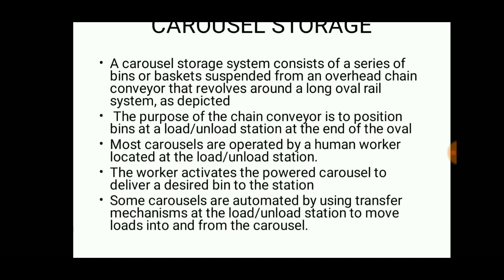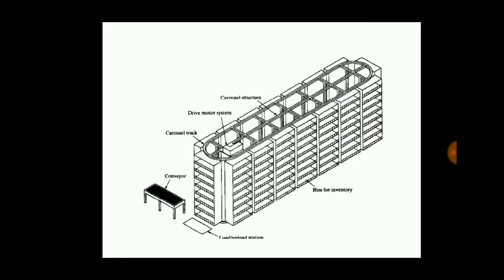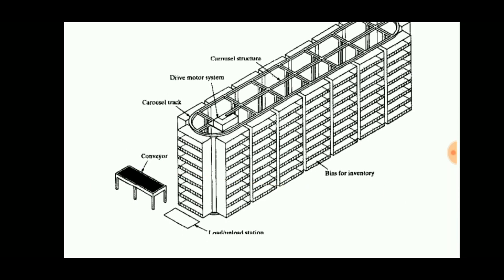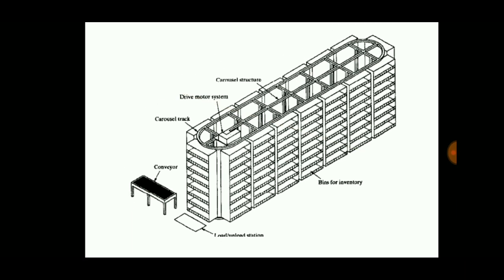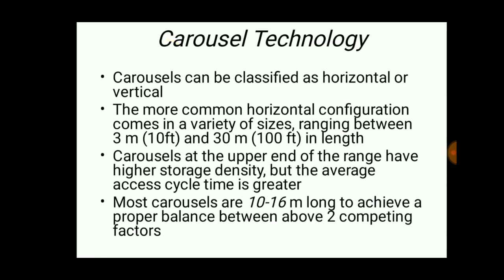Most carousels are operated by a human worker located at the load and unload station. When a particular bin is to be taken or unloaded, it is moved by a human worker or by an electric motor to the load or unload station. The human worker then takes it and places it on the conveyor, and the conveyor transports the material.